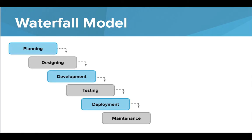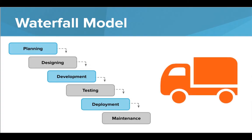The first method we'll talk about is the waterfall method. This model may work for specific projects, but it's not typically the best model to use, because it's a very inflexible model. The entire project is planned upfront and then each stage of the lifecycle is completed sequentially until the final project is delivered back to the client or customer. The client or customer doesn't get a chance to see the product or offer feedback until the process is fully complete.